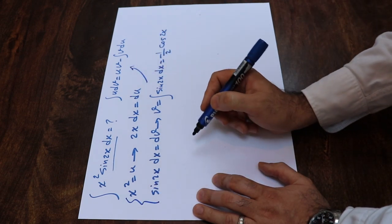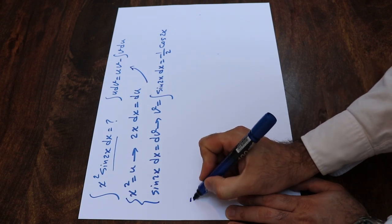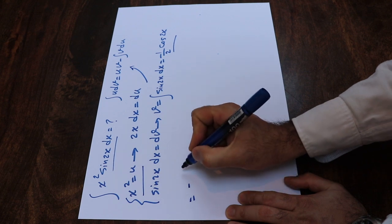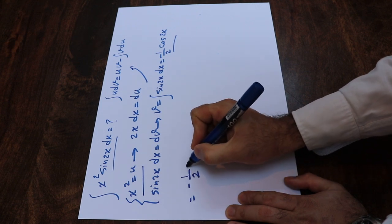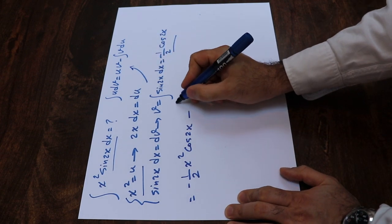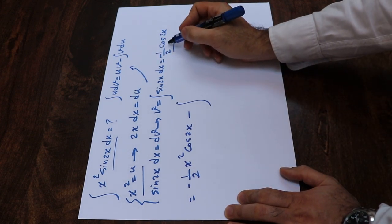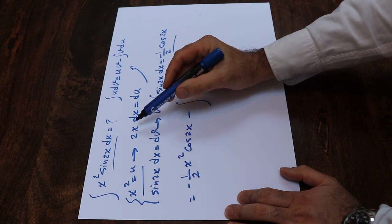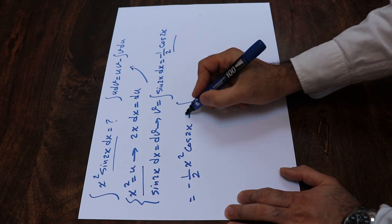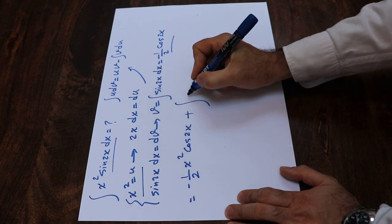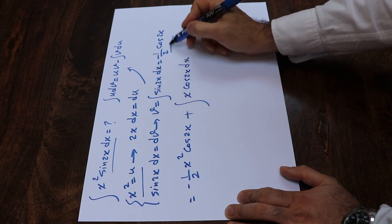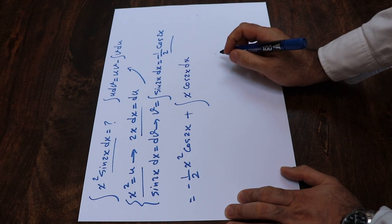Substituting into the formula gives uv minus the integral of v du. That means this will be equal to minus 1/2 times x² cosine(2x) — that is uv — minus the integral of v du. The 2s cancel and the two minus signs give a plus, so that becomes plus the integral of x cosine(2x) dx, which is v times du.